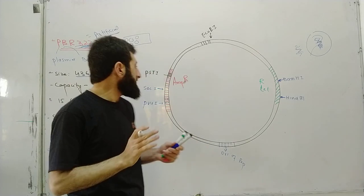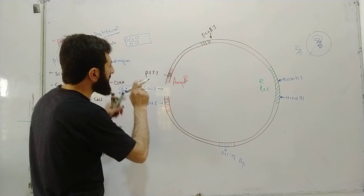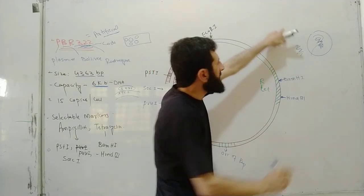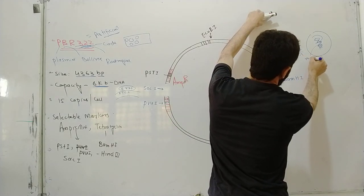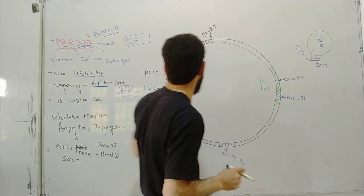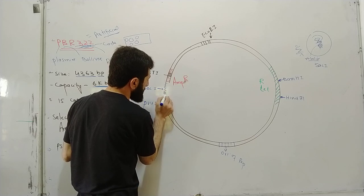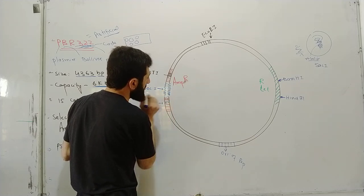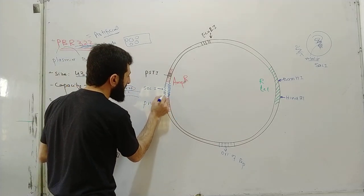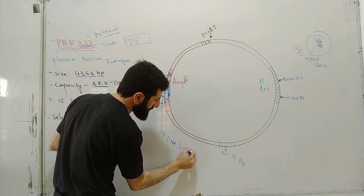We use the same enzyme — for example, SalI — on the plasmid, and the same enzyme on the human DNA to cut out the insulin gene. This ensures compatible ends. Then we use DNA ligase to join the human insulin gene into the plasmid, creating recombinant DNA.